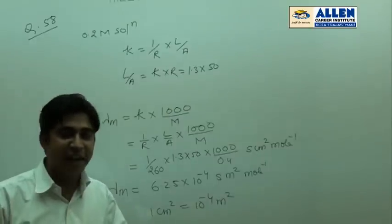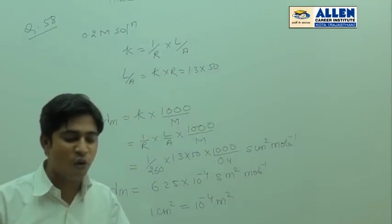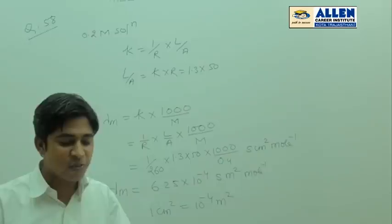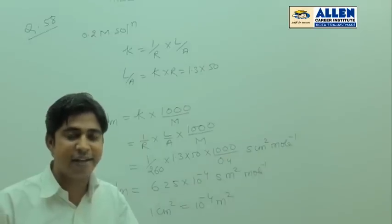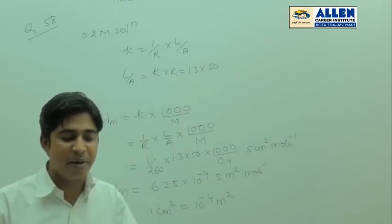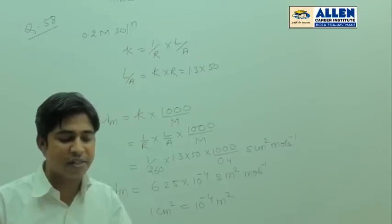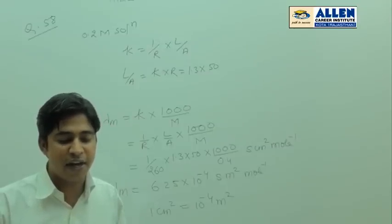In question number 58, resistance of 0.2 M solution of an electrolyte is 100 ohm. The specific conductance of the solution is 1.37 meter inverse. If resistance of the 0.4 M solution of the same electrolyte is 260 ohm, its molar conductivity is?